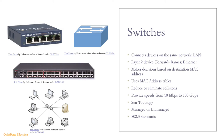Switches reduce or even eliminate collision domains. Each port on a switch is its own collision domain. If there is one device on a port and it is in full duplex, then no collisions can occur. Switch port speeds can typically range from 10 megabits per second on older switches to 100 gigabits per second on more advanced switches.